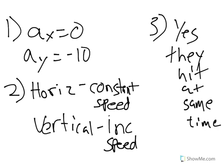Okay guys, this is your video review for the projectile test. Number one, it says what's the acceleration in the x and the acceleration in the y? The acceleration in the x is zero meters per second, as it always has been, and the acceleration in the y is negative ten meters per second squared, as it's always been.